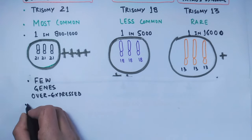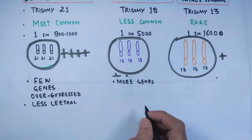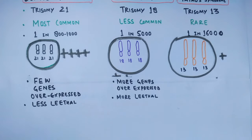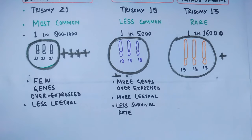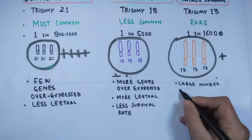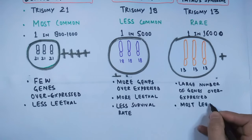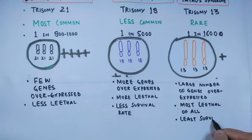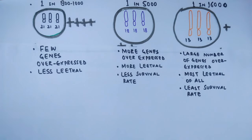In Down syndrome, only a few genes are overexpressed, which means it is less lethal. In Edwards syndrome, more genes are overexpressed than in Down syndrome, making it more lethal with very low survival rates. Finally, in Patau syndrome, a large number of genes are overexpressed, making it the most lethal of all three trisomies with almost negligible survival rates.